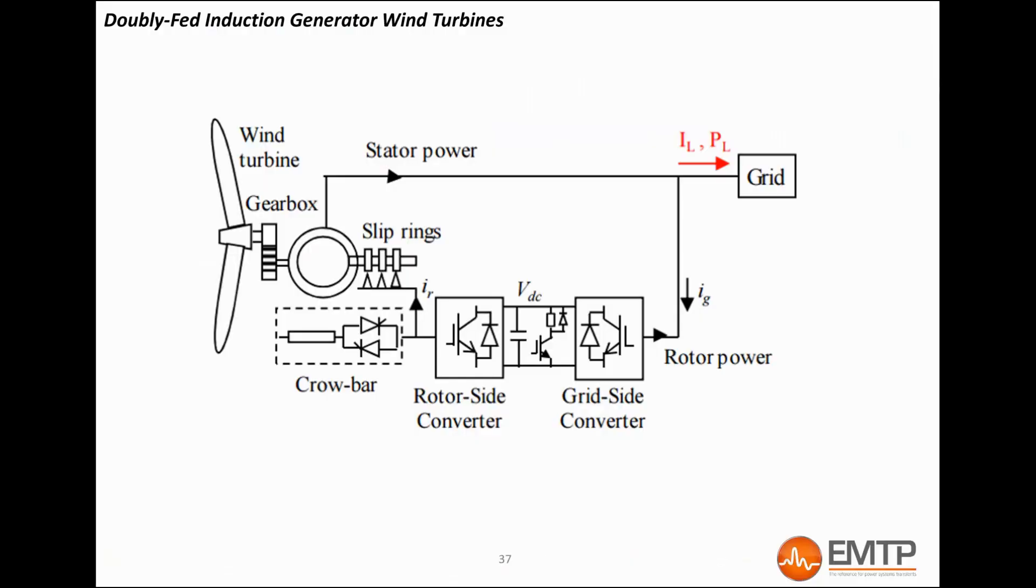Doubly fed induction generator wind turbines, which are generally called DFIG wind turbines, have the stator of an induction generator directly connected to the grid and the wound rotor of this machine connected to the grid through an AC-DC-AC converter. This converter system consists of two voltage source converters, the rotor-side converter and the grid-side converter. Although not shown in this figure, a line inductor called choke filter and a shunt harmonic AC filter are used on the grid-side converter to improve power quality.